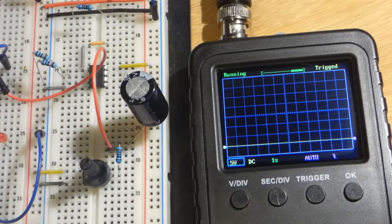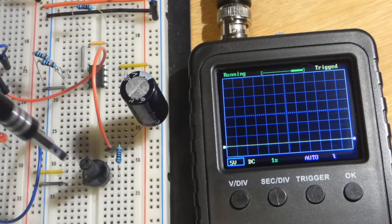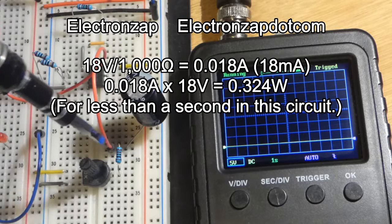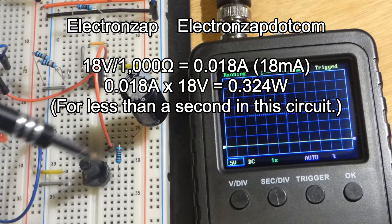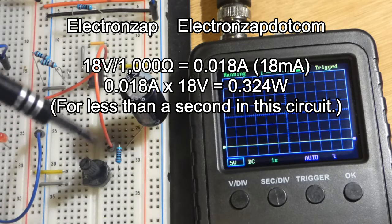In the last video we had this setup here: a 1000 ohm resistor using an 18 volt power supply, so we're actually exceeding the quarter watt rating of the resistor but only for about a second while we are charging or discharging this capacitor.